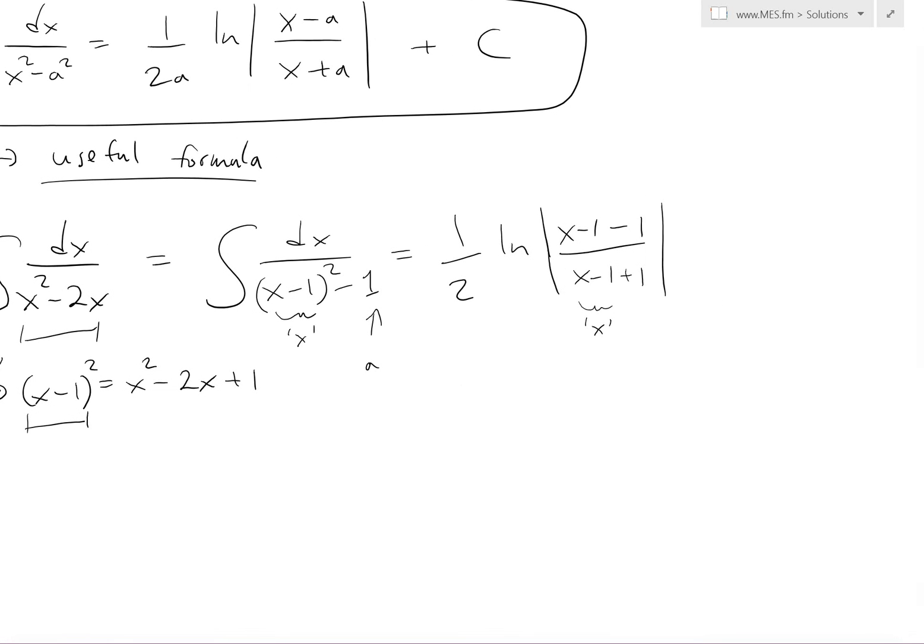So what do we get overall, and also plus C. This equals 1 over 2 ln of x minus 2 over x, plus C.